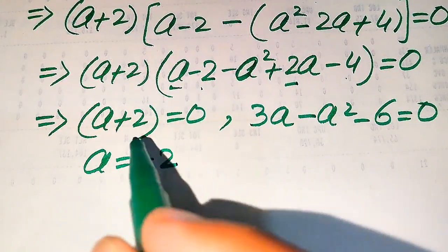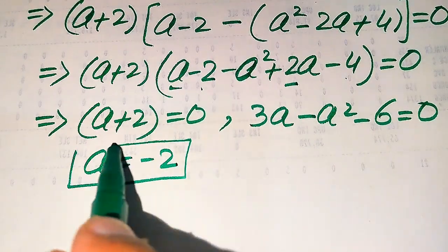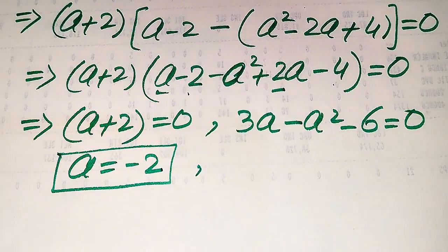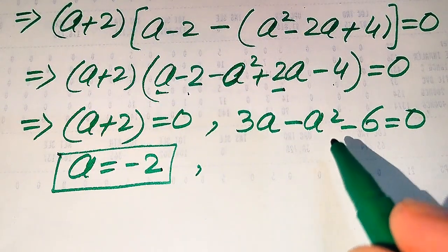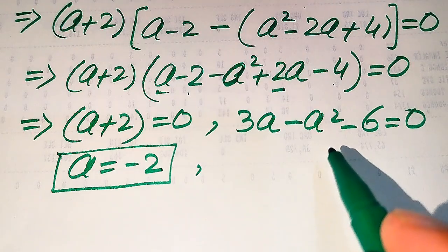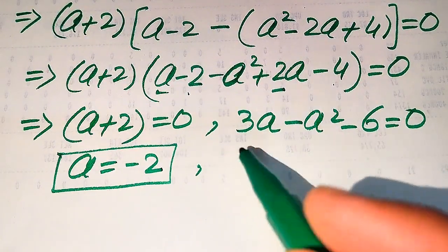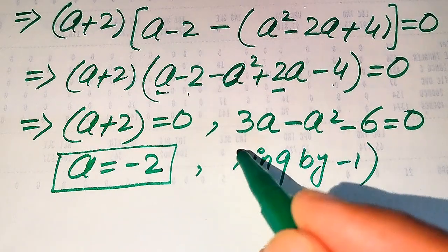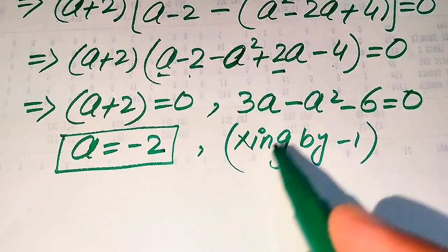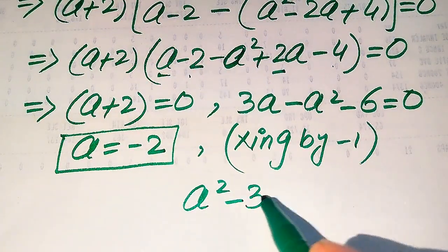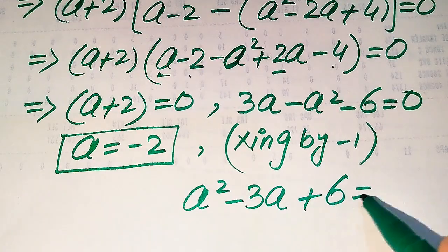From the first case, a plus 2 equals zero, so a equals negative 2. This is the first root. For the second case, we have a quadratic equation not in standard form, so we multiply both sides by negative one. This gives a squared minus 3a plus 6 equals zero.